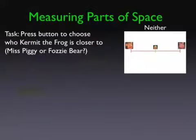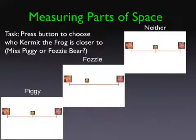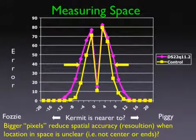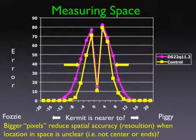How do we know this is true? We do lots of experiments. In this one, you have to tell whether Kermit the Frog is closer to Fuzzy Bear or Miss Piggy. When he's right at one end or the other, it's very easy. But in that fuzzy middle zone, it's much harder. Data from children aged 7 to 14 shows that kids with the deletion need a much bigger difference before they can see the difference — their resolution for space is worse. They have a reduced ability to discriminate until differences become larger.